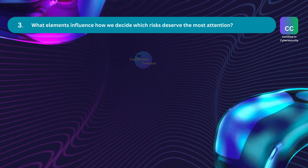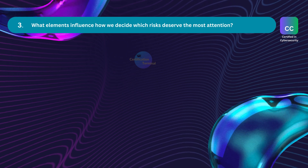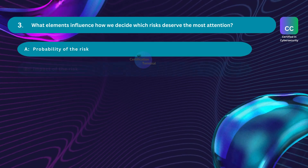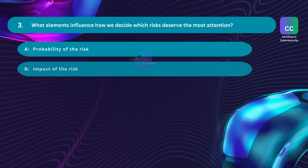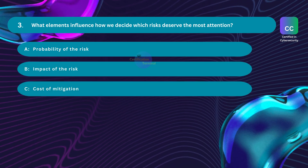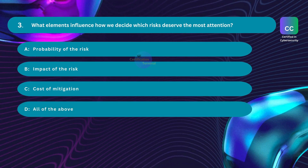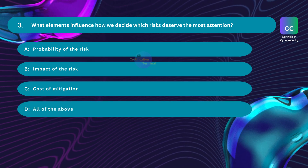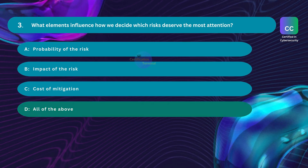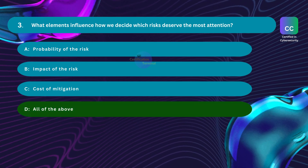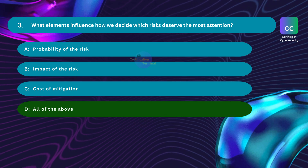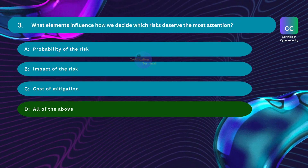Question number three: what elements influence how we decide which risks deserve the most attention? Option A: probability of the risk. Option B: impact of the risk. Option C: cost of mitigation. Option D: all of the above. The correct answer is option D: all of the above — impact, probability, and cost of mitigation all influence how we decide which risks deserve the most attention.